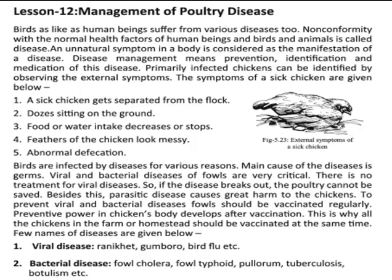Bars are infected by disease for various reasons. The main causes of disease are germs and bacteria. Viral and bacterial disease in falls are very critical. There is no treatment for viral disease, so if the disease breaks out, the fault cannot be saved. Beside this, parasitic disease causes great harm to the sickan. To prevent viral and bacterial disease, falls should be vaccinated regularly. Vaccination gives power to the sickan body through the blood. To prevent this type of bacterial disease, we will have to keep the vaccine to the birds, then they will be able to prevent this type of disease. All the sickans in the farm should be vaccinated at the same time.